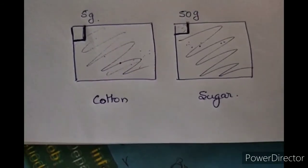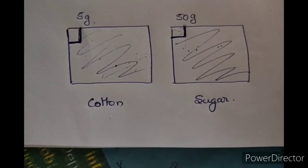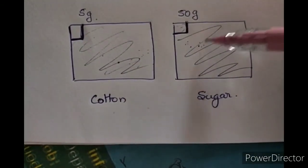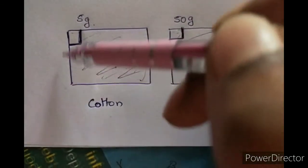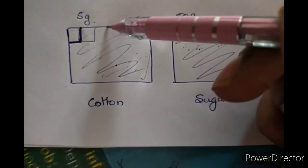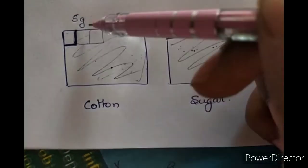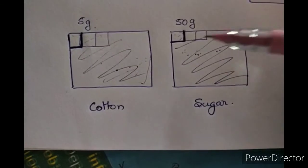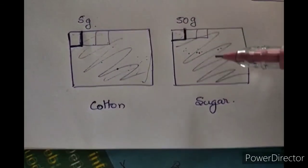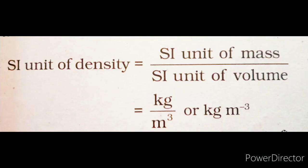Consider two boxes of the same volume — one filled with cotton and one filled with sugar. The sugar is more densely packed. For the same volume, cotton weighs about 5 grams while sugar weighs about 50 grams. Therefore, cotton is less dense than sugar. The SI unit of density is mass divided by volume — kilogram per meter cube, or kg·m⁻³.